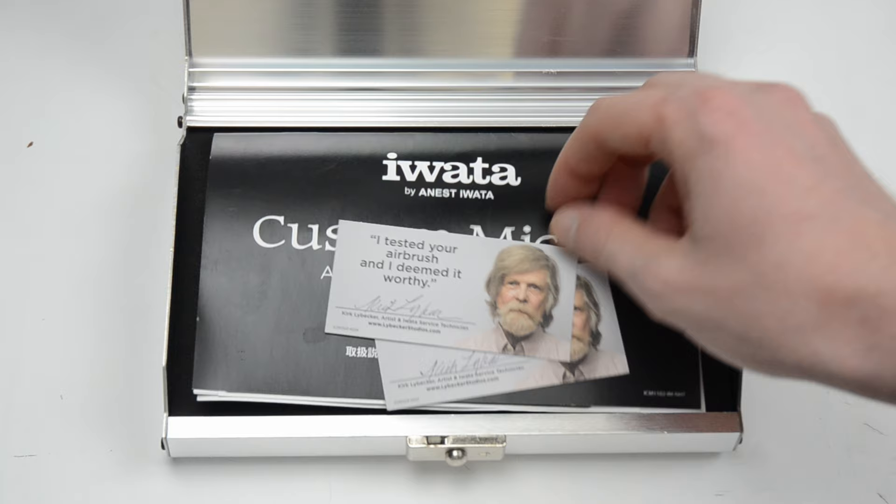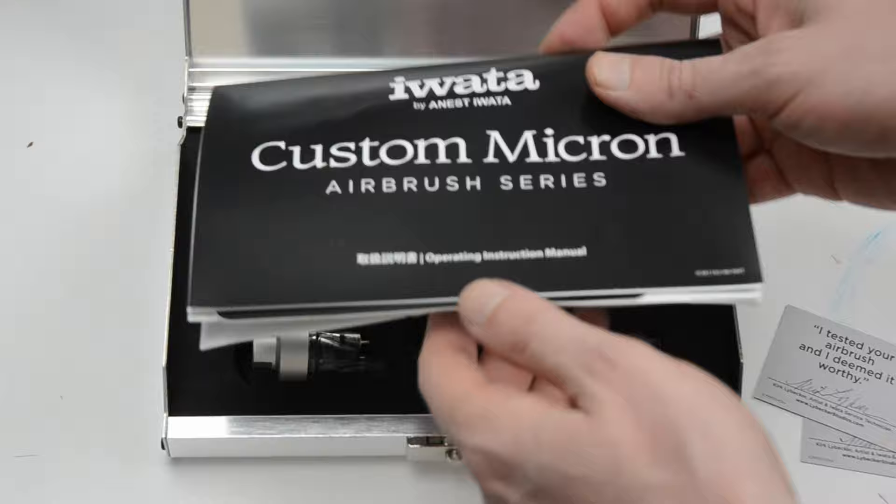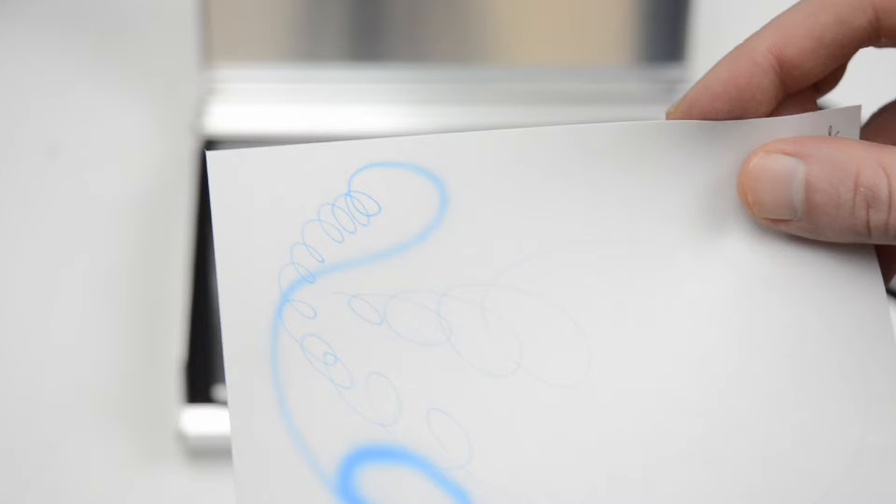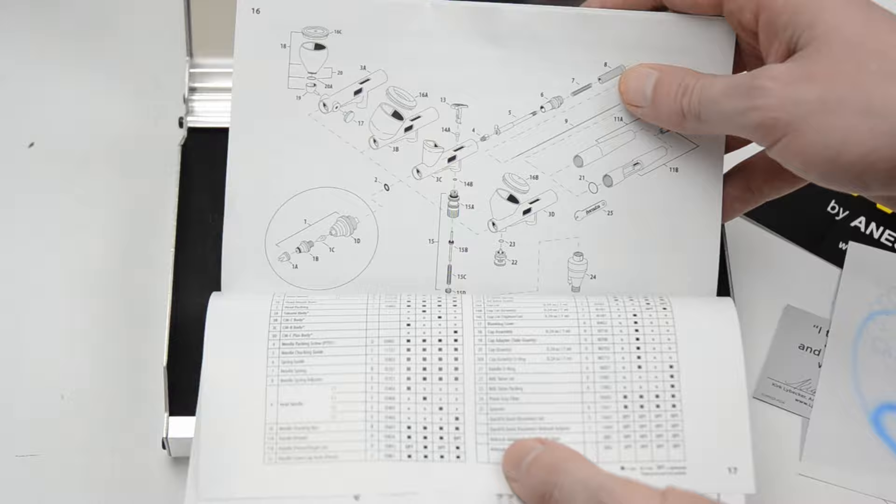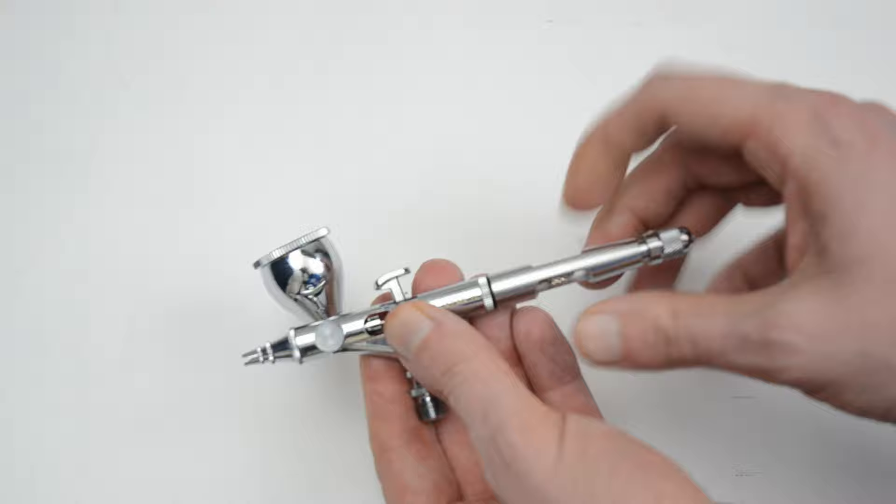Also inside the box are some business cards of one of the technicians who test the airbrush here in the United States. I believe they're based in Portland, Oregon. Also inside the box is a manual along with a sticker and a test spray pattern. The test pattern shows the high level of detail you can get with this airbrush. The manual is pretty basic and straightforward. It goes into some tips and tricks how to use the airbrush and how to troubleshoot it. At the end here is the included 5 year warranty which you get if you purchase it here in the US.